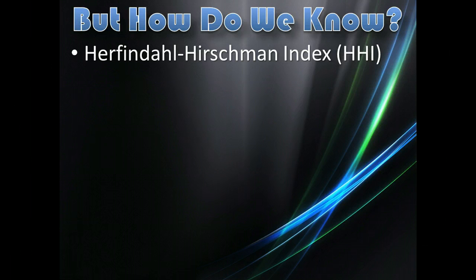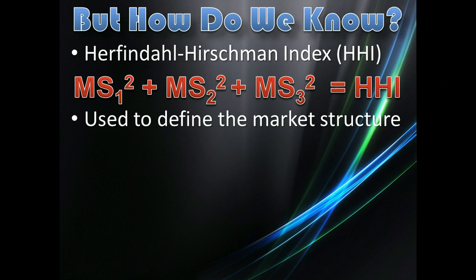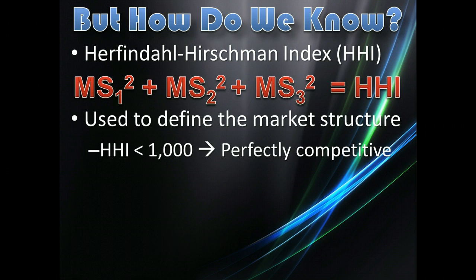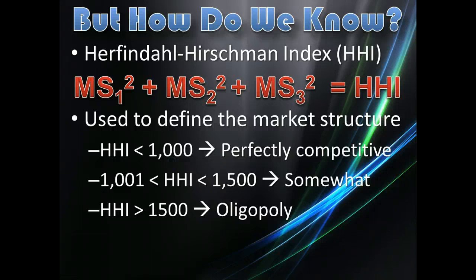How do we know if there are a few firms versus many? One measure used is the Herfindahl-Hirschman Index, or HHI. This index takes the market share for each firm and squares it, then adds all the squared market shares together to get a number. That HHI number tells us whether we're dealing with competition or oligopoly. If the HHI score is less than 1,000, it's a very competitive industry. Between 1,000 and 1,500 is somewhat competitive. Greater than 1,500 indicates an oligopoly.